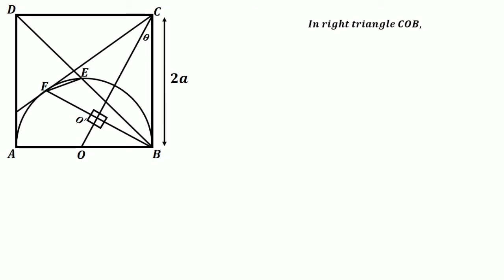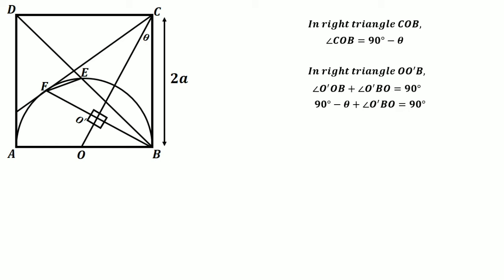Now in right triangle COB, angle COB equals 90 degrees minus theta. In right triangle OO'B, angle O'OB plus angle O'BO equals 90 degrees, so 90 degrees minus theta plus angle O'BO equals 90 degrees, meaning angle O'BO equals theta. We mark this in our figure.